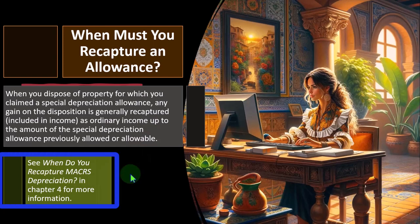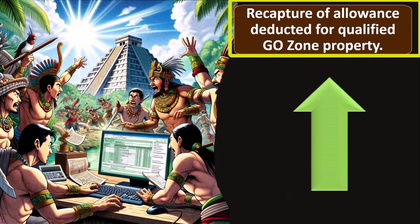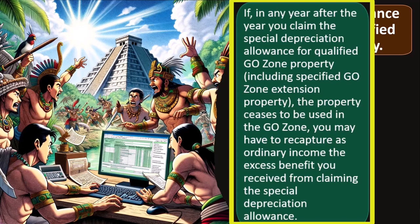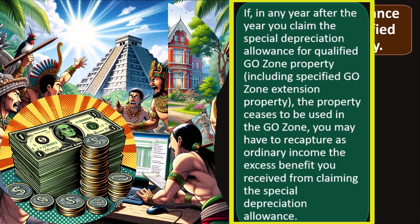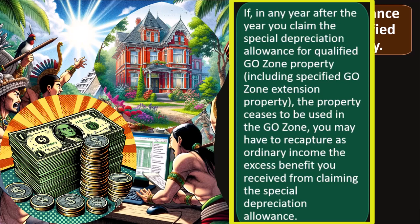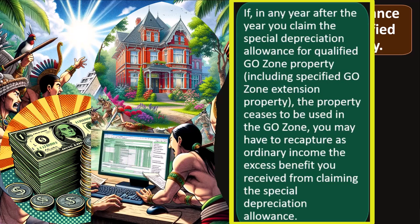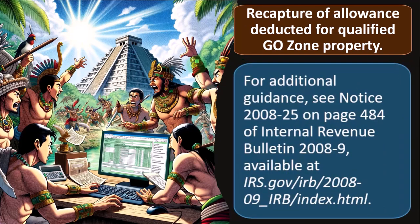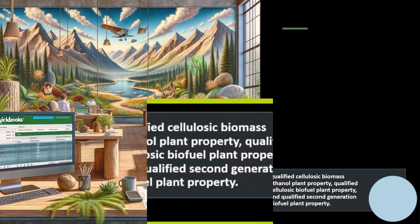See when you recapture MACRS depreciation in Chapter 4 for more information. Recapture of Allowance Deduction for Qualified GoZone Property: if in any year after the year you claim the special depreciation allowance for qualified GoZone property — including specified GoZone extension property — the property ceases to be used in the GoZone, you may have to recapture as ordinary income the excess benefit you received from claiming the special depreciation allowance. This is somewhat of an unusual situation, although it could come up again. For additional guidance, see Notice 2008-25 on page 484 of Internal Revenue Bulletin 2008-9, available on the IRS website.